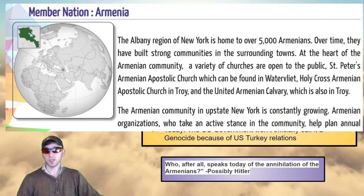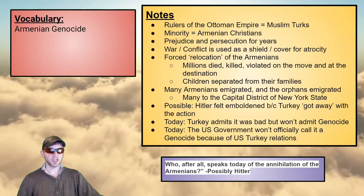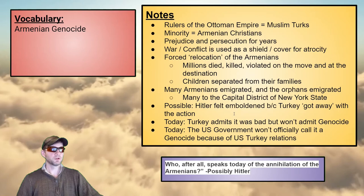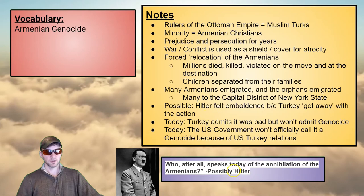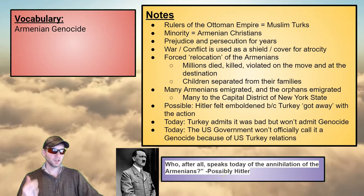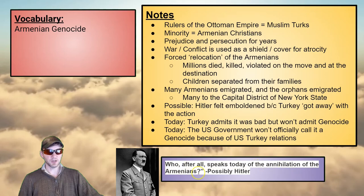Many moved to the capital district of New York State — one of the largest Armenian diaspora destinations was around Albany, New York. It is entirely possible that because of this genocide, Hitler felt emboldened because Turkey 'got away with the action.' Hitler was talking about killing people in Poland to make room for Germans — similar to what was happening in the Ottoman Empire, moving Armenians out to have more room to live. It's said Hitler spoke the words: 'Who, after all, speaks today of the annihilation of the Armenians?'